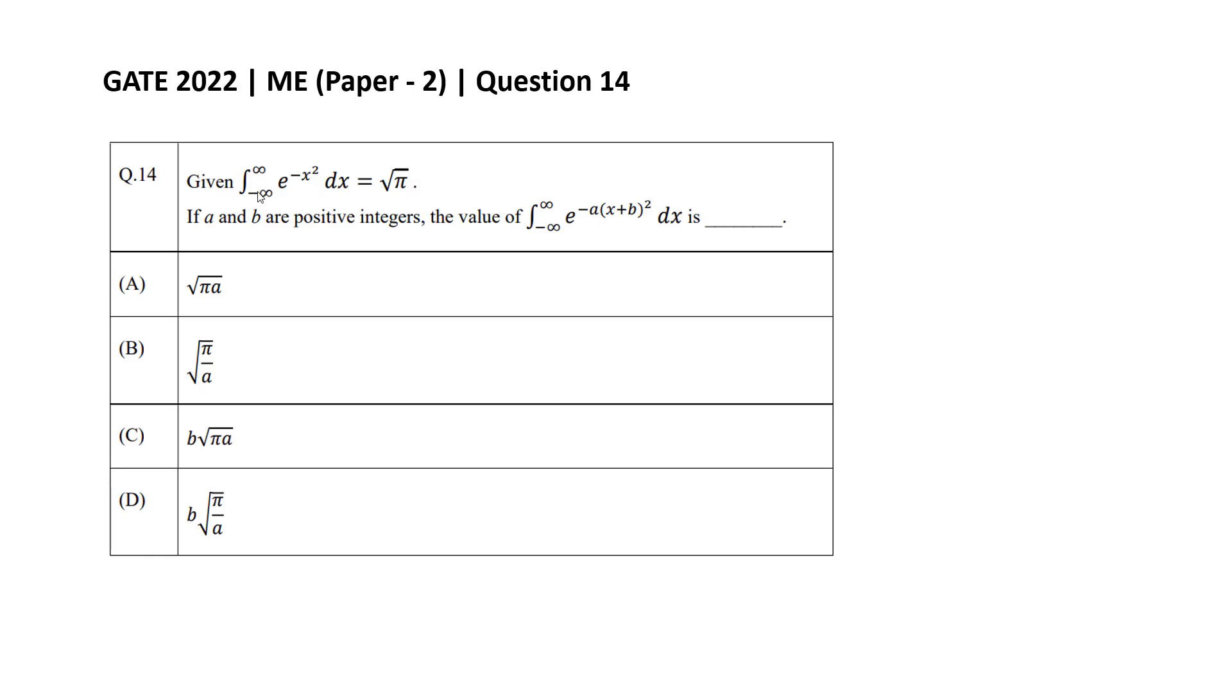The question is: given integration minus infinity to infinity e raised to the power minus x squared dx is equal to root pi. If a and b are positive integers, the value of integration minus infinity to infinity e raised to the power minus a times x plus b squared dx is, and these are the four options.